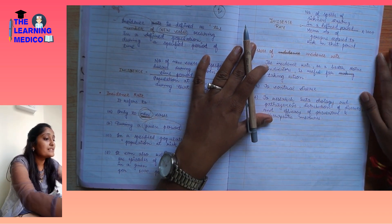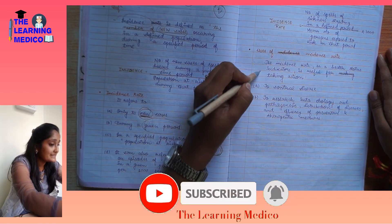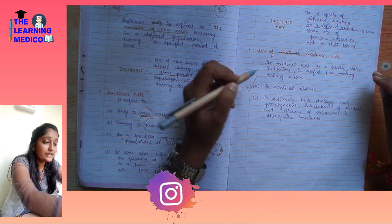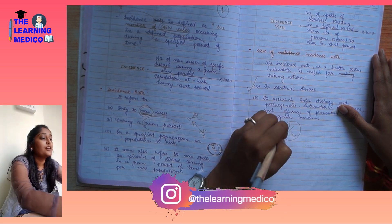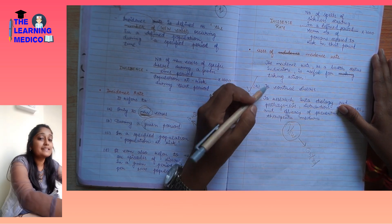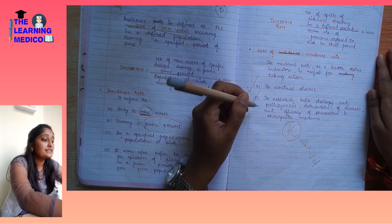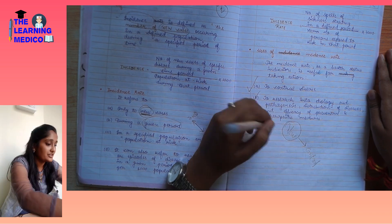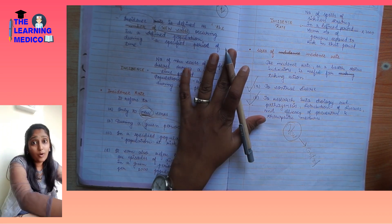Incidence rate as a health status indicator is useful for taking action to control disease. If we are aware of how many new cases are coming, we can control from that point. It is also useful to research into etiology and pathogenesis, distribution of disease, and efficacy of preventive and therapeutic measures.